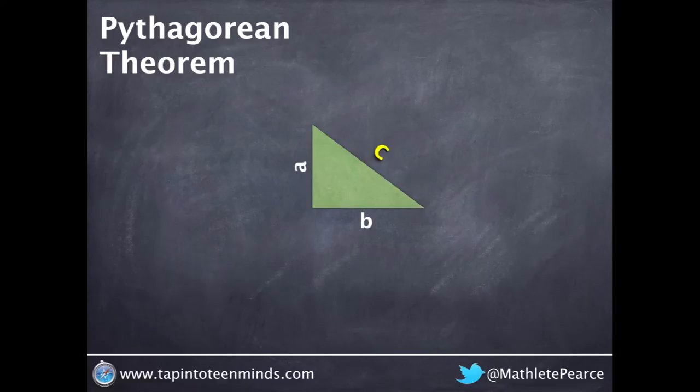In the previous video, we used a visual proof of Pythagorean Theorem to show that a squared plus b squared is equal to c squared.